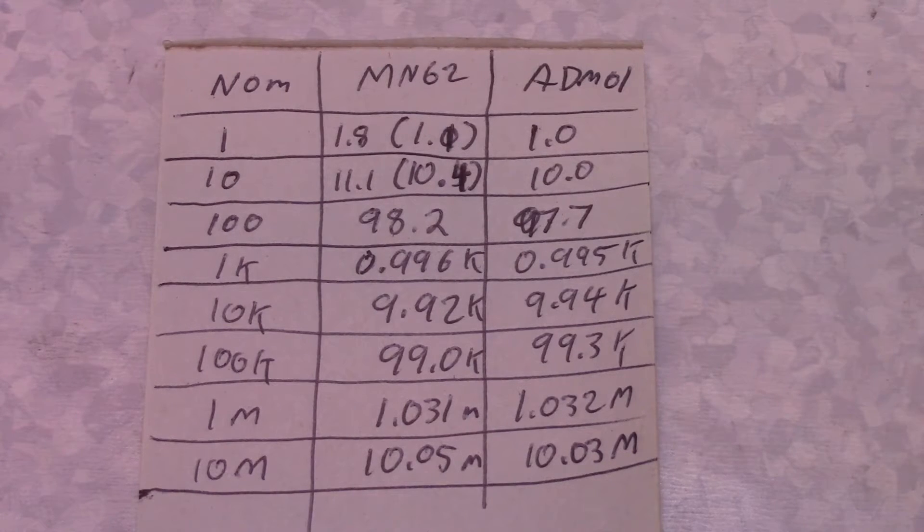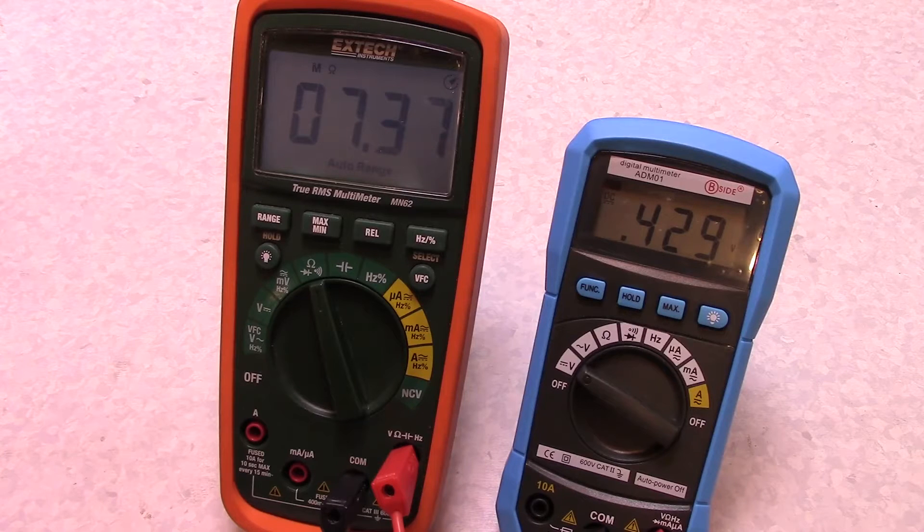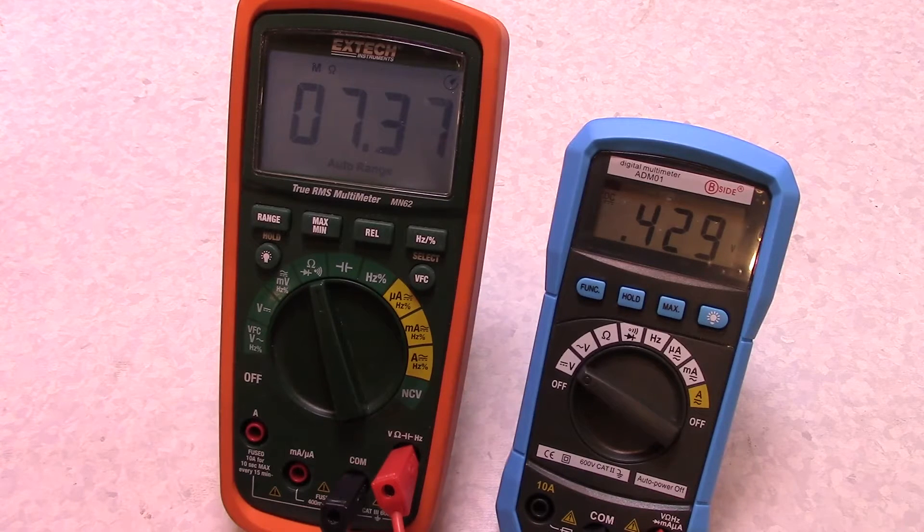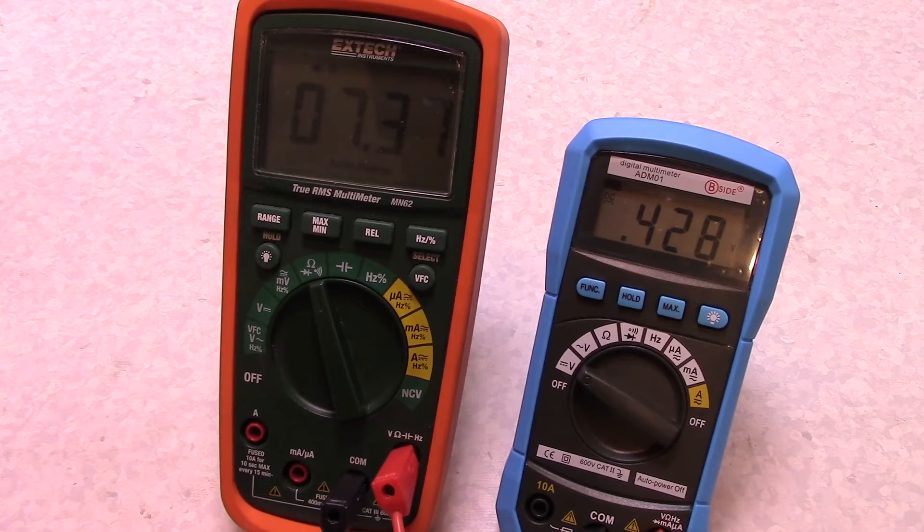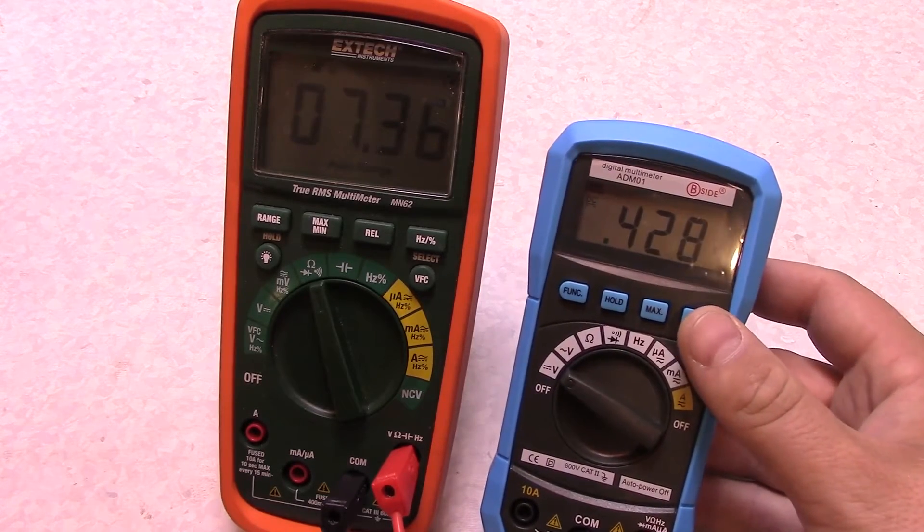So, it's not a super high-end meter by any means, but didn't expect it to be. Take a quick look here. I got this hooked up reading the input resistance. So it looks like it's a little over 7 meg ohms. So, it's not quite a 10 meg ohm input impedance.